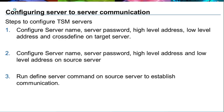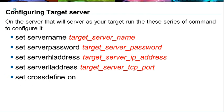The second step is to configure the server name, server password, high-level address, and low-level address on the source server, then run the define server command. Here are the commands for the target server: run set server name providing the target server name, set server password with a unique password, set server high-level address with the target server IP address, set server low-level address with the TCP port, and then set cross-define on.